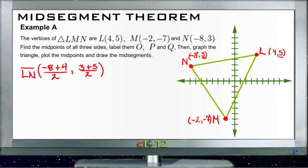So we have -8 plus 4, we get -4 divided by 2 is -2. So our x coordinate of the midpoint is going to be -2. And our y coordinate is going to be 5 plus 3, that's 8, divided by 2 is 4. So the midpoint of LN is going to be (-2, 4), right about there.